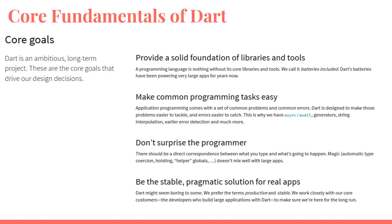Dart makes it easier to handle web development problems, and errors are easier to catch. That's why it has async, await, generators, string interpolation, and earlier error detection. In comparison to JavaScript, Dart doesn't have automatic type coercion or globals, which eliminates ambiguity. This was designed to help Google developers familiarize themselves with a new language and continue working with it long-term instead of going back to JavaScript. The Dart developers have said it's somewhat boring, but they prefer it to be more productive and stable.